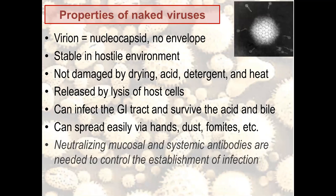If viruses have only nucleic acid and capsid, this virus is a naked virus — it has no envelope. Naked viruses are stable in the environment; they are resistant to drying, acids, detergents, and heating. When they infect cells, they cause lysis and cell death. Due to their resistance, naked viruses can infect the gastrointestinal tract because they survive in acid and bile in the stomach or intestines. They can easily spread via hands, dust, and food products. Neutralizing antibodies, both mucosal and systemic, are important to control this infection.